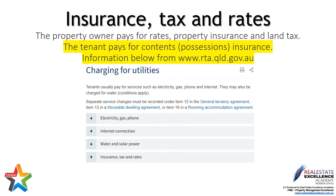During your tenancy it is your responsibility to pay for your own contents and possessions insurance. Refer to the terms of the agreement in relation to electricity, gas, phone, internet, water, or solar power to ensure you are aware of all your responsibilities and requirements for connections of such services. The property owner pays for rates, property insurance, and land tax. Our agency strongly recommends that you ensure you have contents and possessions insurance.